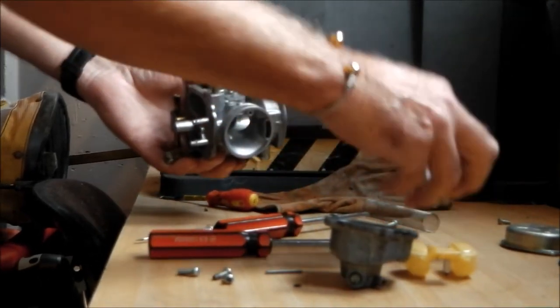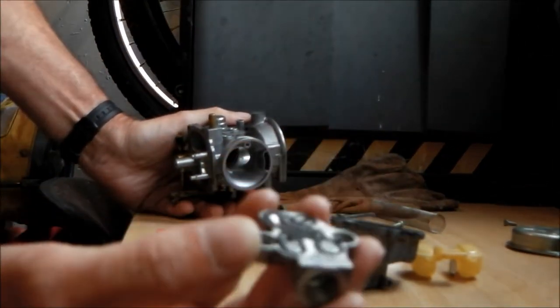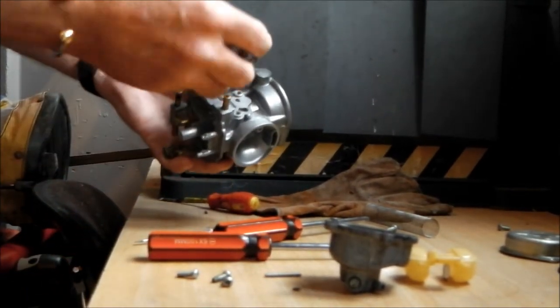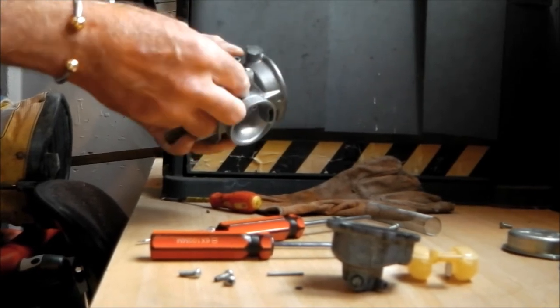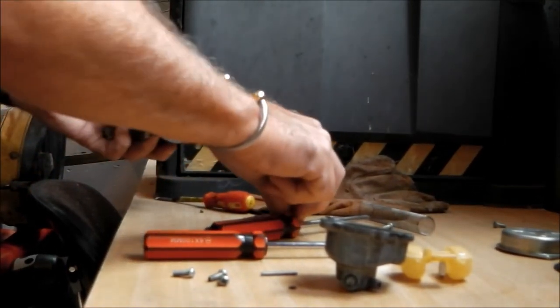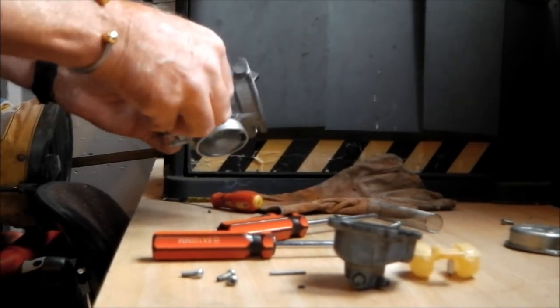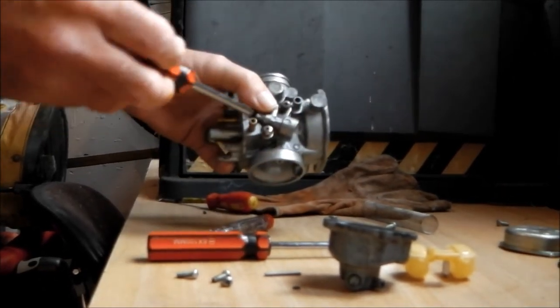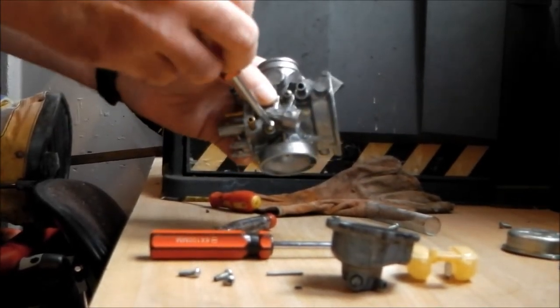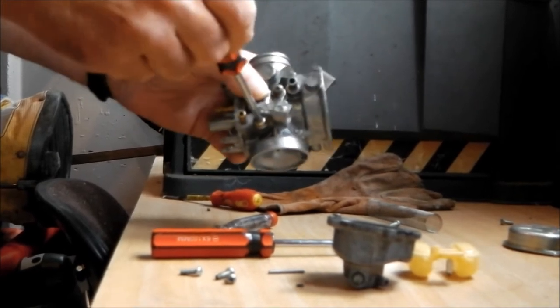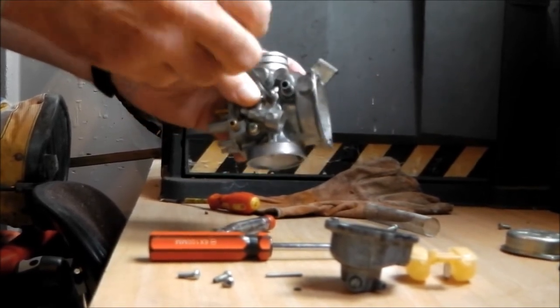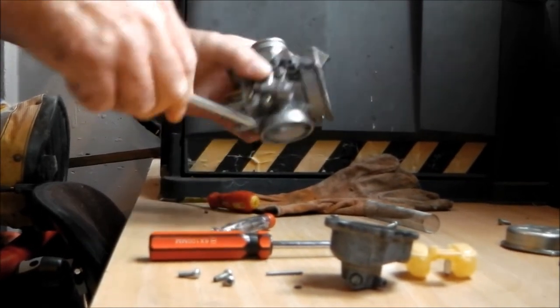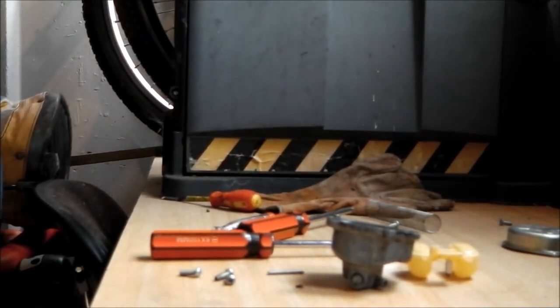Then we've got the choke side. Obviously give all that a spray of carb cleaner, get it all nice and clean before we put it back on. That will only fit one way. That's that one there. And that one there. Two screws. Don't over tighten these. Don't over tighten any screws on your carb. Just pinch them up.